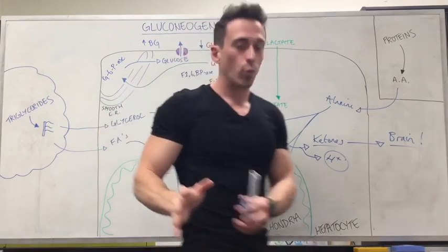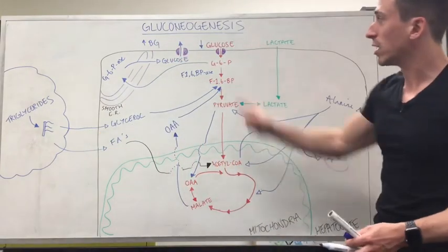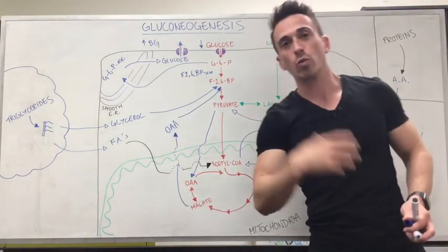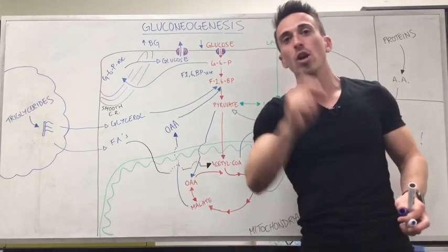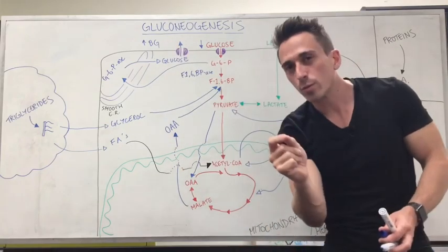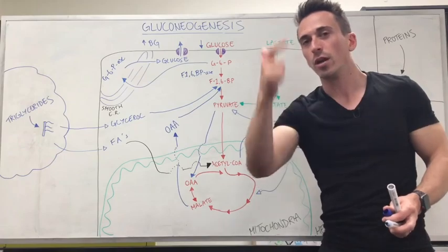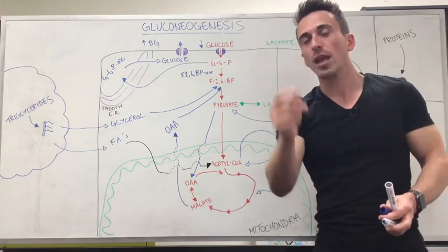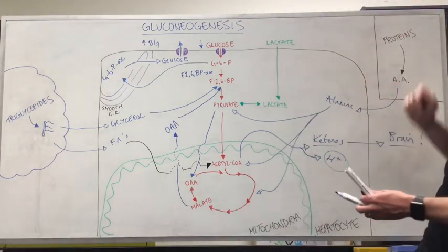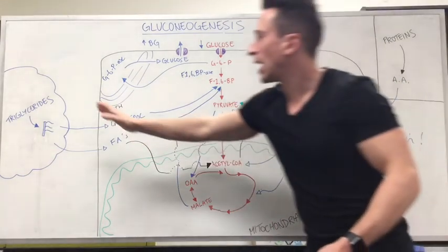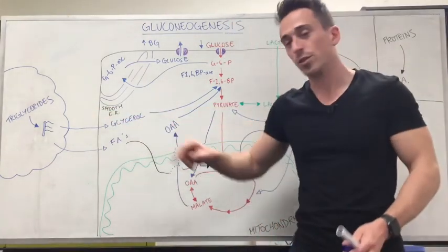So to summarize: the process of gluconeogenesis is triggered by low glucose, with the outcome being high glucose. The hormones involved are glucagon, cortisol, and noradrenaline, and the substrates are lactate, amino acids, and triglycerides — specifically glycerol.